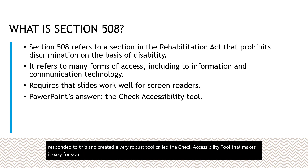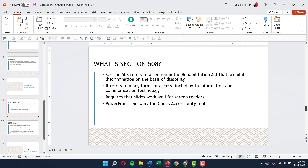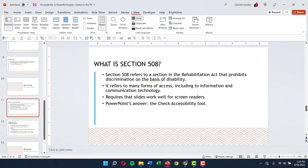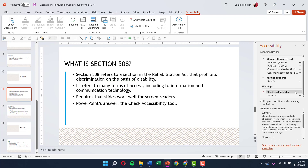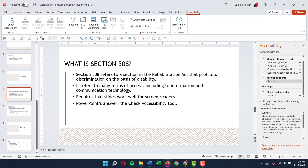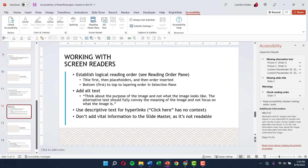PowerPoint has created a robust tool called the Check Accessibility tool that makes it easy to see how accessible your presentation is and how well you're doing specifically with regard to screen readers. If I go to the Review tab and click Check Accessibility, a whole list of warnings and errors will appear — things that are missing and that will make things more difficult for a screen reader. This is something really important to go through at the very end of your presentation.